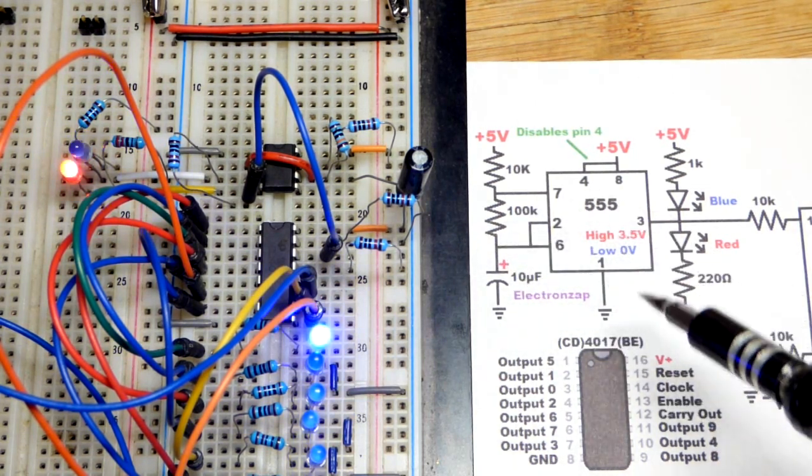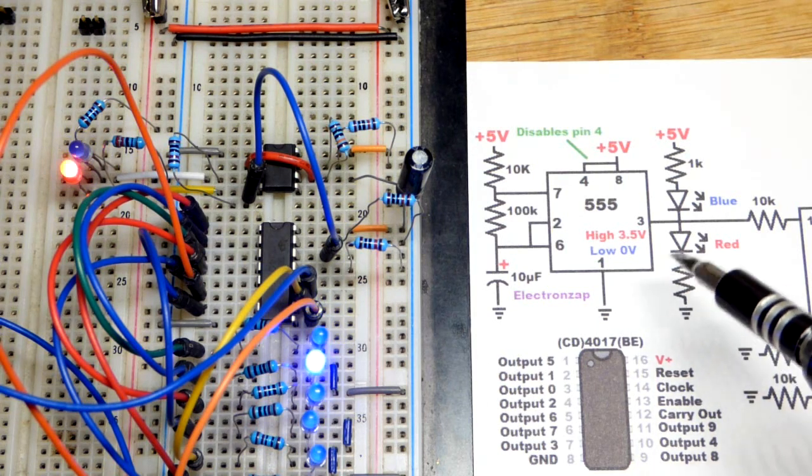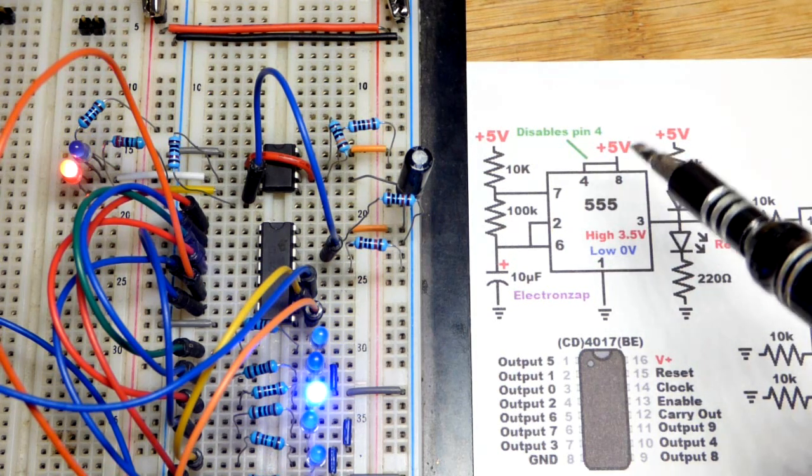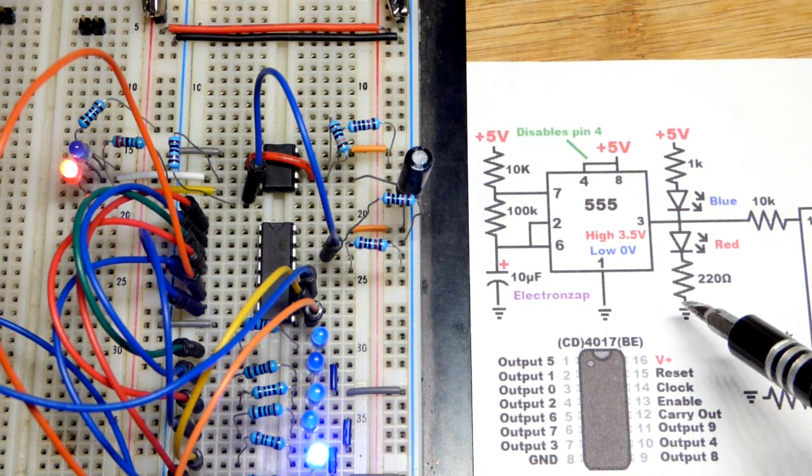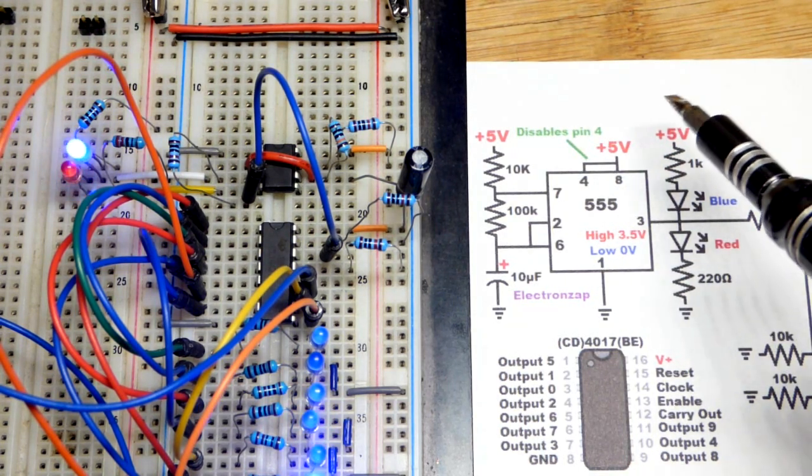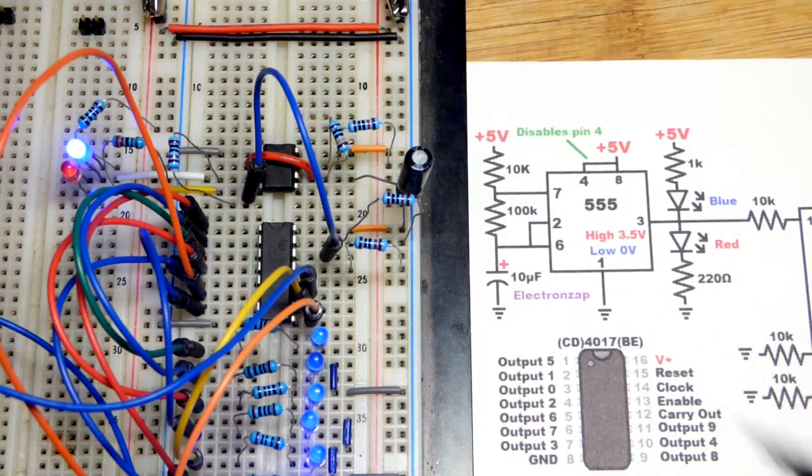It's just going to keep alternating between high and low as long as power is applied. When the output is high, the red LED will light up. It doesn't get five full volts, but close enough. And when the output is low, then the blue LED lights up.